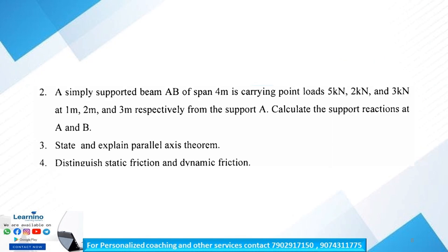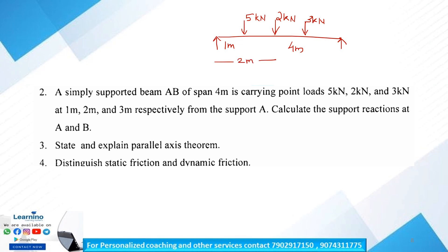Let's try a simply supported beam. Simply supported beam A–B, span 4 m, carrying point loads of 5 kN and 3 kN at 1 m, 2 m, and 3 m from A. The support reactions are RA and RB. We apply the Parallel Axis Theorem. We use static friction and dynamic friction. The 3-mark and 9-mark questions involve X, Y, Z components of forces.